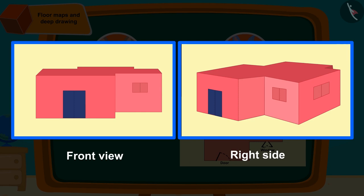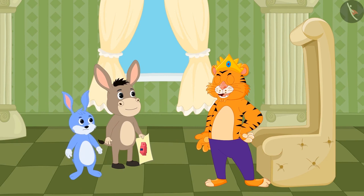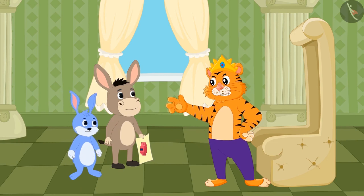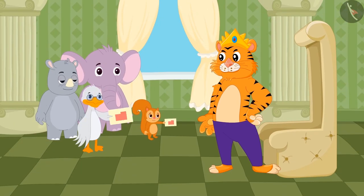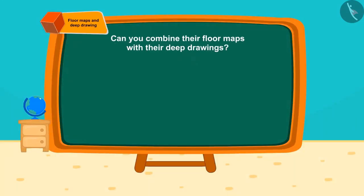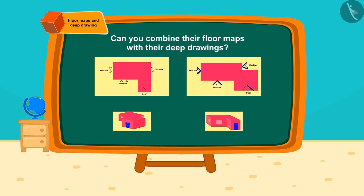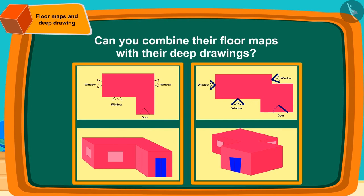The king liked the design made by Bholla, but he wanted to see more designs by different people. The next day, Chanda and Babu Uncle Duck reached the king's court with their floor maps and deep drawings. Can you match the floor maps with the deep drawings? You can find the answer by pausing the video. Well done, kids — your answer is absolutely right.